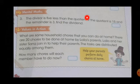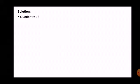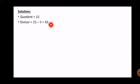That means whatever the quotient we have, we have to minus 5 from that quotient to get the divisor. The quotient is 15, so we will minus 5 from 15 to get our divisor. So 15 minus 5 equals 10. That means 5 less than the quotient equals 10, so our divisor is 10.